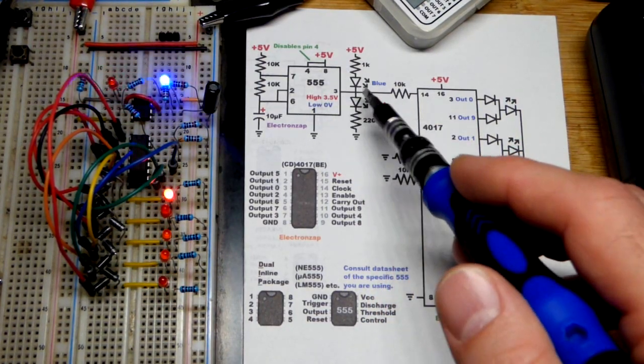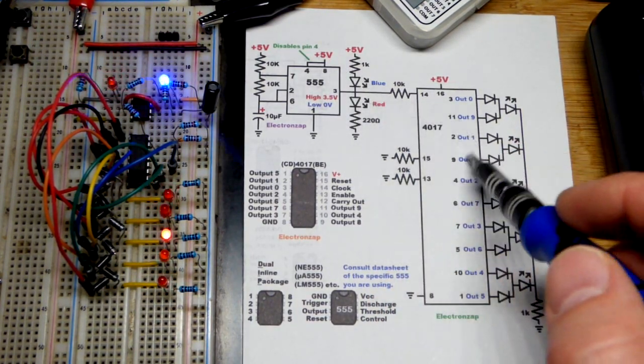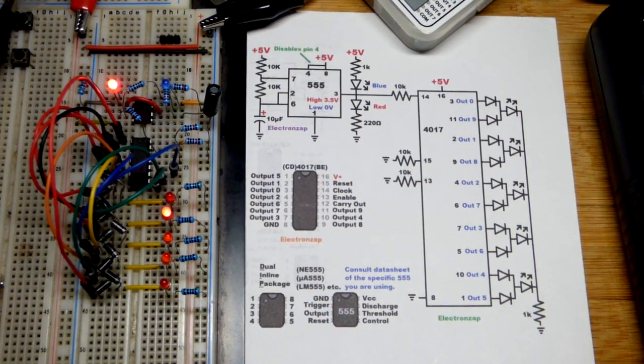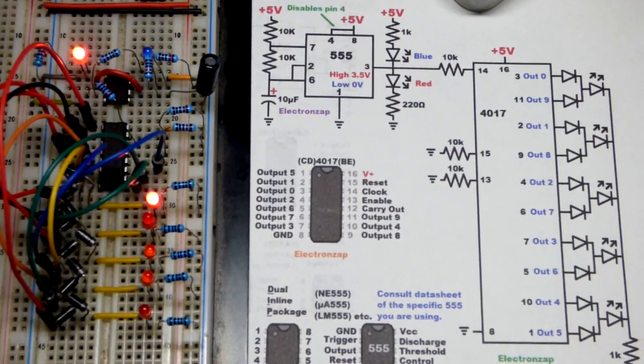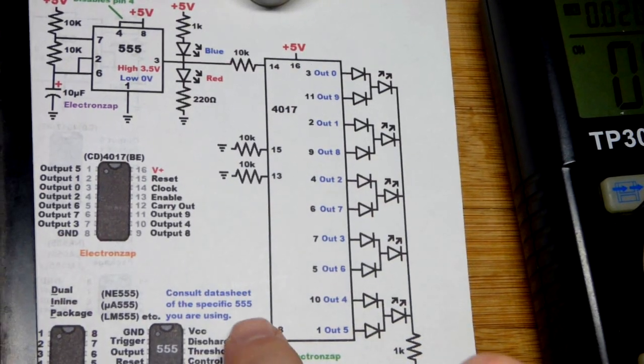So I got a 555 timer. Every time the output goes high it changes which output of the counter goes high. And there is the pin layout, but we're not going to focus on that right now. We're going to keep this short.